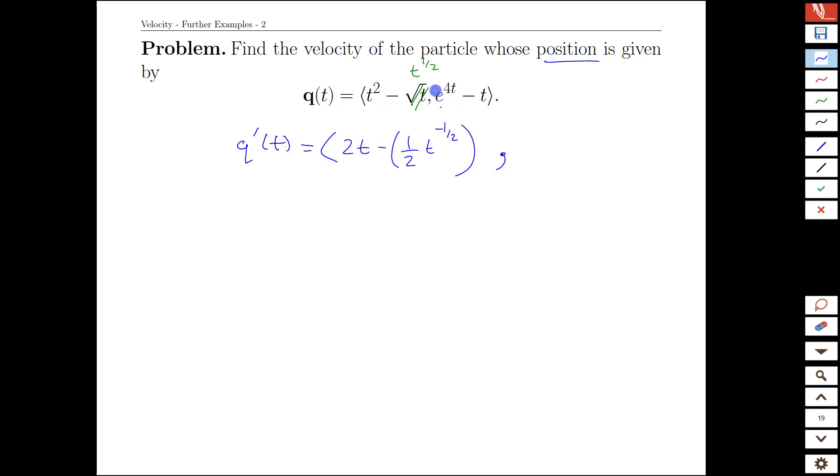Coming to the second term, the y component, we have the derivative of e to the 4t, and the derivative of any exponential is the same exponential again. But then we had 4t in the exponent, so we have to apply the chain rule. We take the derivative of the exponent, and that just gives us a 4 multiplier. Then we keep going by subtracting the derivative of t, which is 1. And we just keep going.